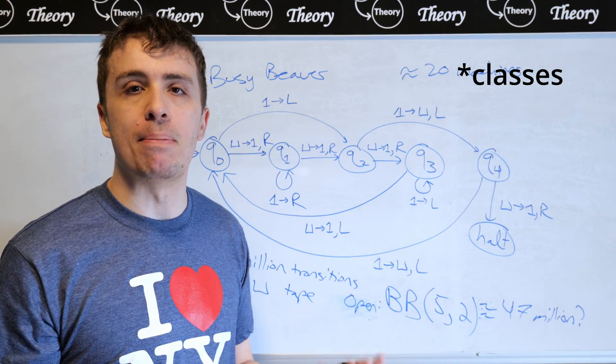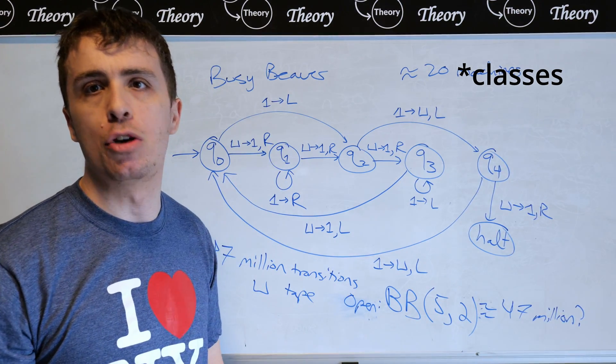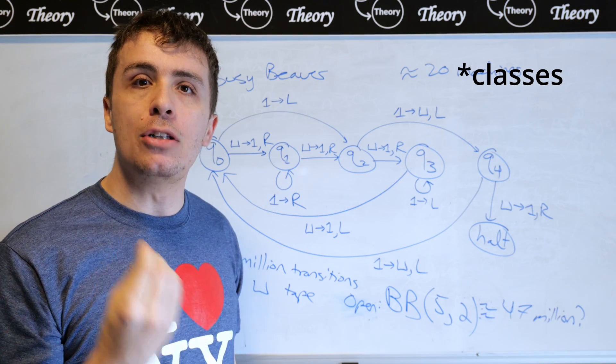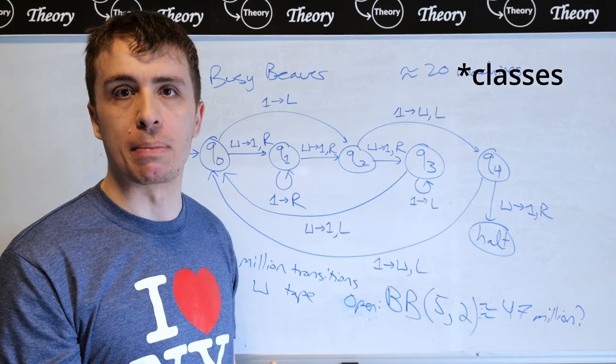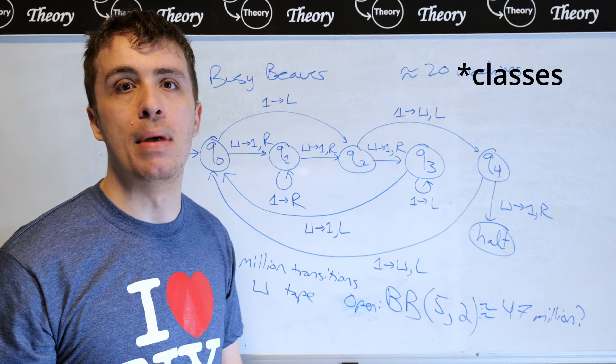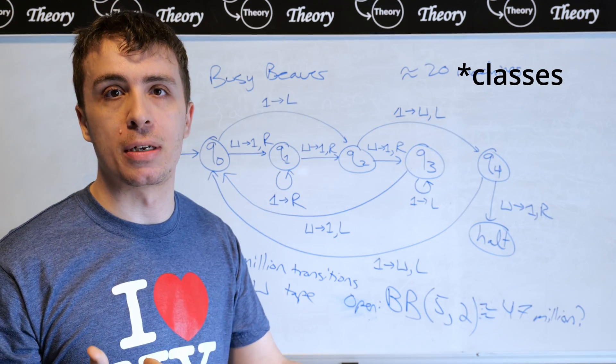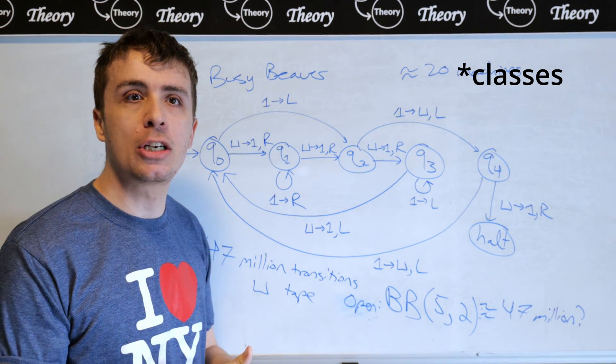Then what we can do is to finally determine what is the longest running time of such Turing machine. And why would this be important? It's not important to determine whether or not it's equal to 47 million. Who cares about that? The thing that's important is, can we understand a little bit more about the behavior of Turing machines that run a really long time?